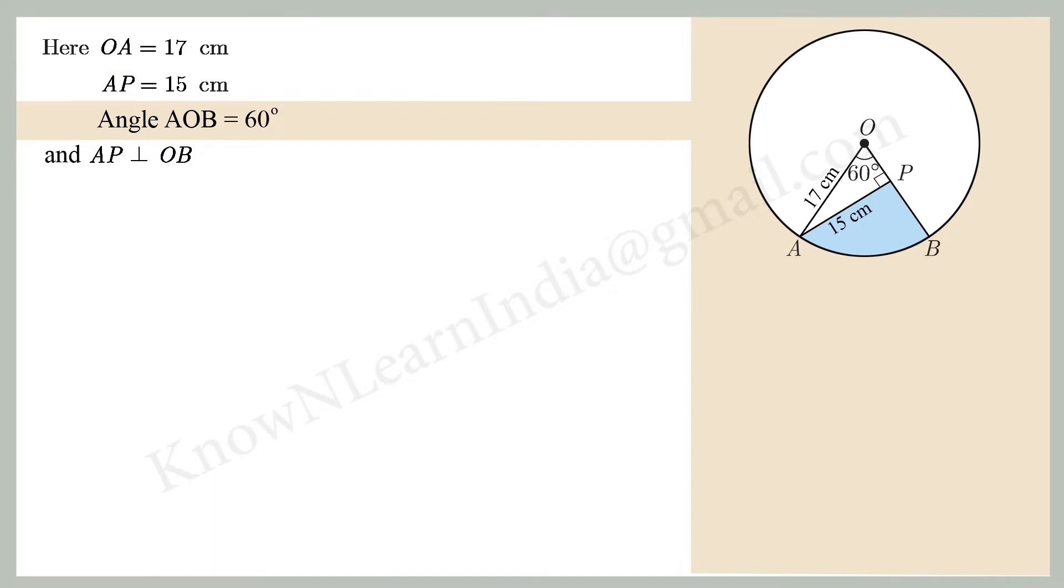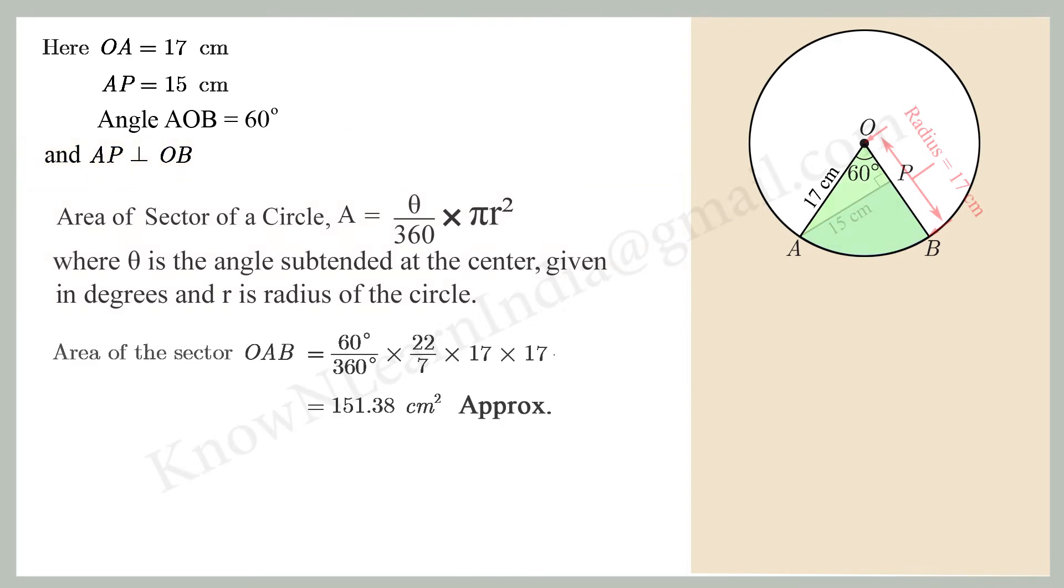Angle AOB equal to 60 degree and AP perpendicular to OB. We know area of sector A equal to θ by 360 degree into pi R square, where theta is the angle subtended at the center given in degrees and R is the radius of the circle.